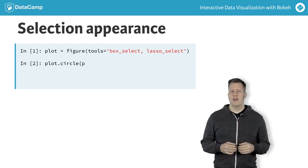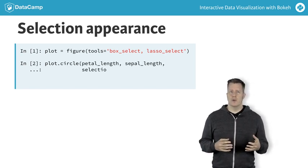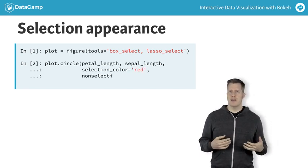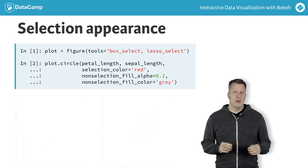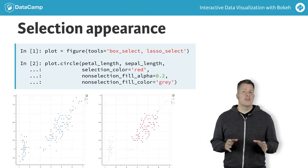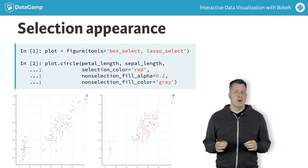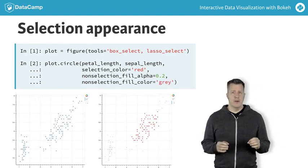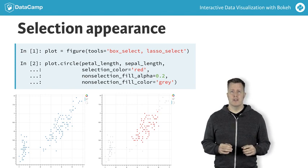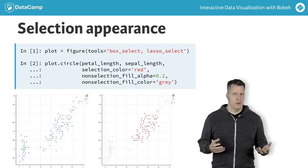When points are selected using one of Bokeh's selection tools, how is this fact made visually evident? By default, once a selection is made, Bokeh draws all the non-selected points with a very low transparency, or alpha value.